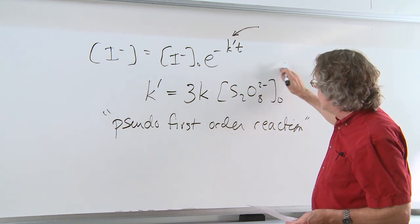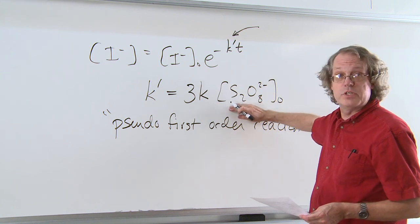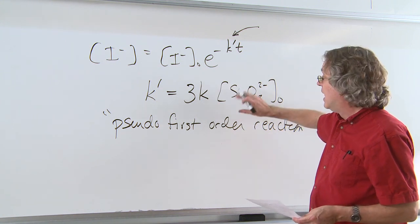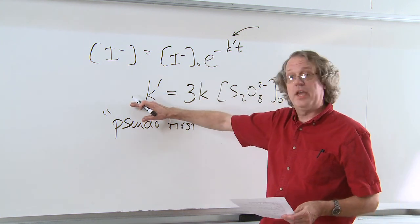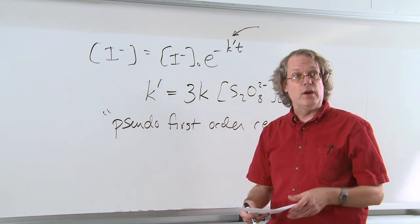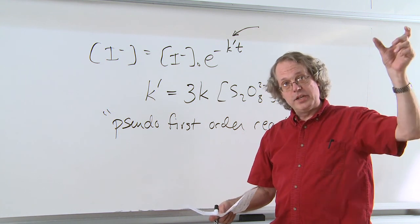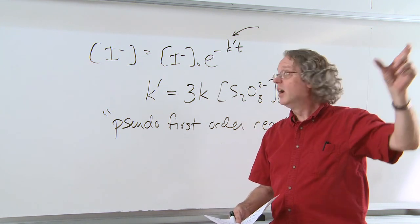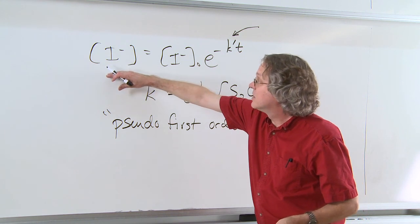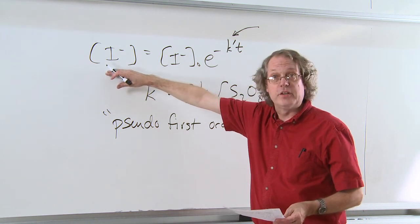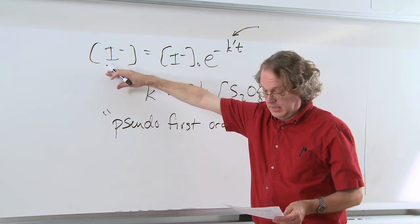So if I didn't know the order of this reaction with respect to S2O8 2- minus, I could vary this concentration and see how K prime varies. So this is a way that we can pull apart a very complicated rate law by looking at the integrated rate dynamics of one particular species with all of the rest of them in excess.